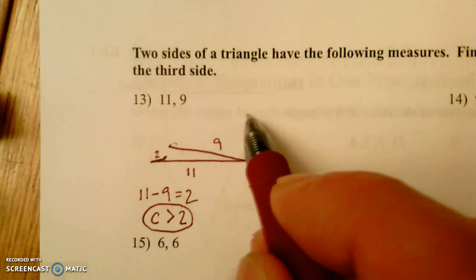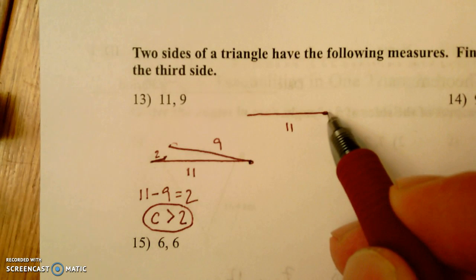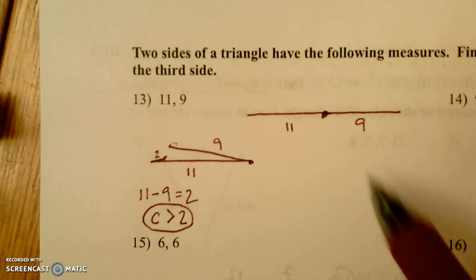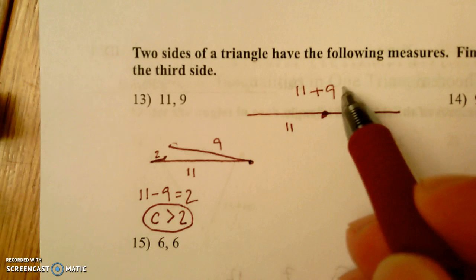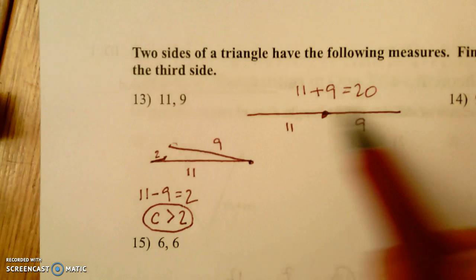On the other hand, if this were our 11 and the 9 were over here, the whole thing were folded out flat, we would need a side that was 11 plus 9, or 20 units long to stretch across.